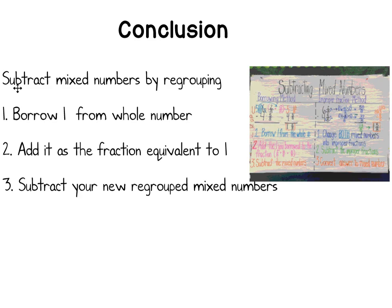So to summarize, today we learned how to subtract mixed numbers by regrouping. There are three main steps. Our first step is that we borrowed 1 from the whole number. We rewrote that 1 as a whole number as a fraction equivalent to 1. And then we added it to our fractional part. Then we subtracted our new regroup numbers. So tomorrow when you come in, please look at this anchor chart for the borrowing method to help you. Thanks, have a good day!